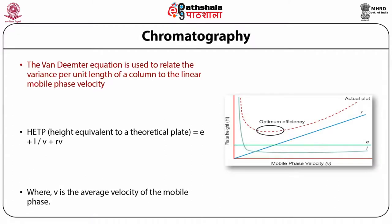The Van Deemter equation is used to relate the variance per unit length of a column to the linear mobile phase velocity. HETP (height equivalent to a theoretical plate) = E + L/V + RV, where E is eddy diffusion, L is longitudinal diffusion, V is average velocity of the mobile phase, and R is resistance to mass transfer. The Van Deemter equation describes the relationship between plate height and column length, which is a measure of column efficiency. It is governed by three cumulative terms — eddy diffusion, longitudinal diffusion, and resistance to mass transfer — all of which contribute to band broadening.